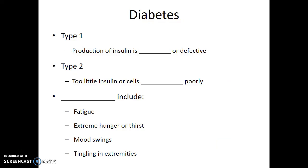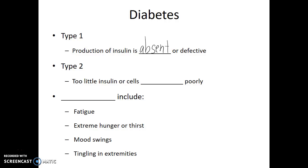You may have heard of a condition known as diabetes. Diabetes is when an individual is not able to manage their blood glucose levels as they should. There are a few different types. Type 1 occurs when an individual is unable to make insulin — the production of insulin is absent or defective. This could be a genetic cause, and so type 1 diabetes is sometimes referred to as juvenile or early onset diabetes. Type 1 can also be caused by an infection of the pancreas that destroys its insulin production ability.